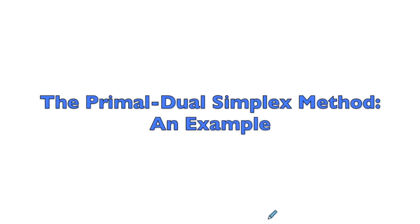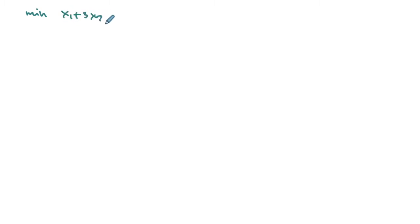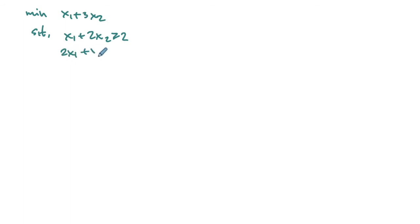In this video we consider an example of the primal-dual simplex method. We'll look at the following LP: minimize x1 plus 3x2, subject to x1 plus 2x2 greater than or equal to 2, and 2x1 plus x2 greater than or equal to 2, with x1 and x2 non-negative.